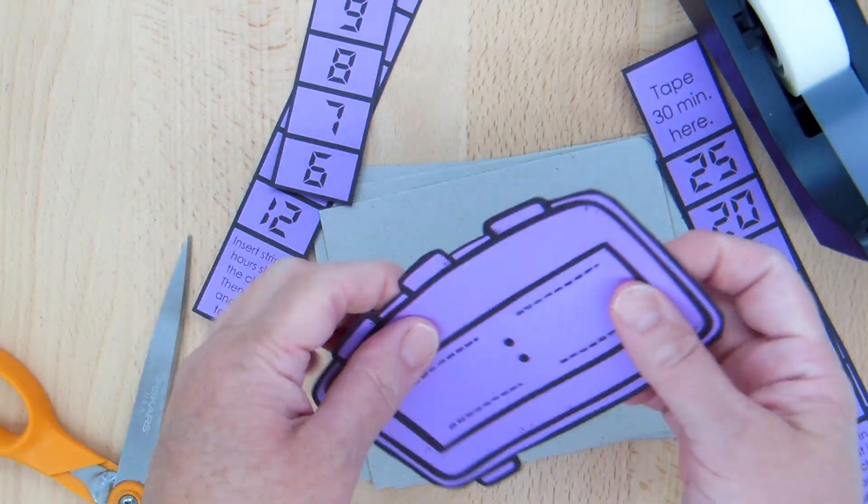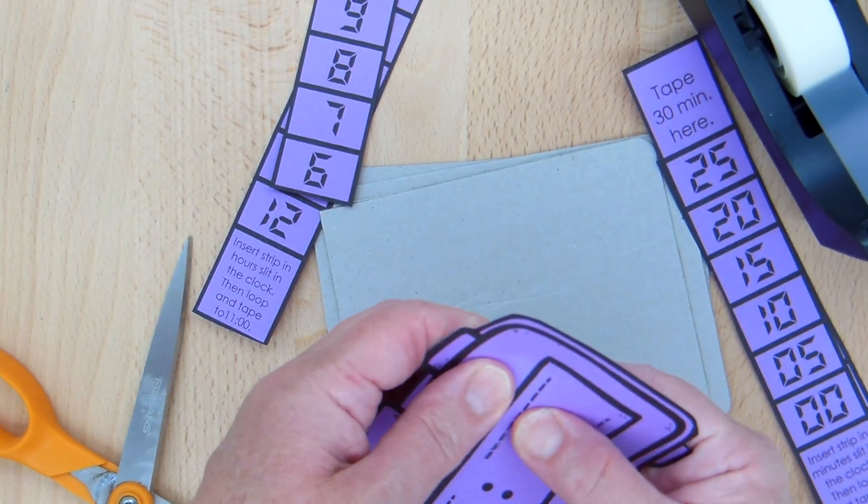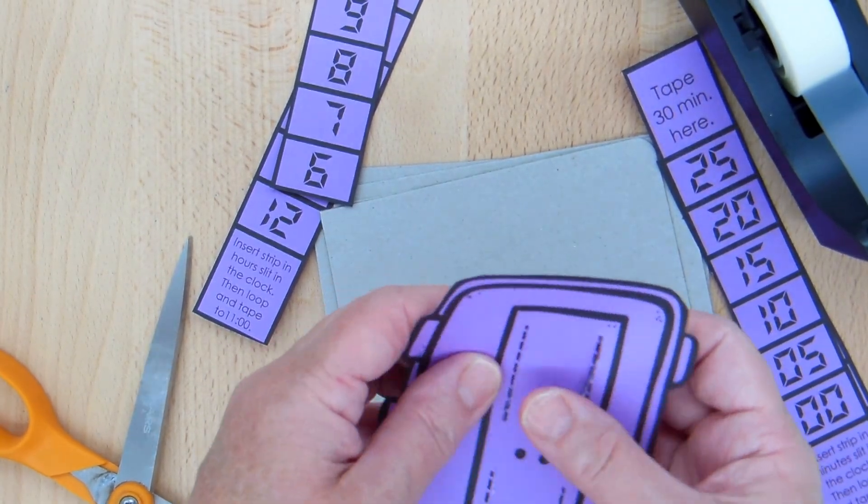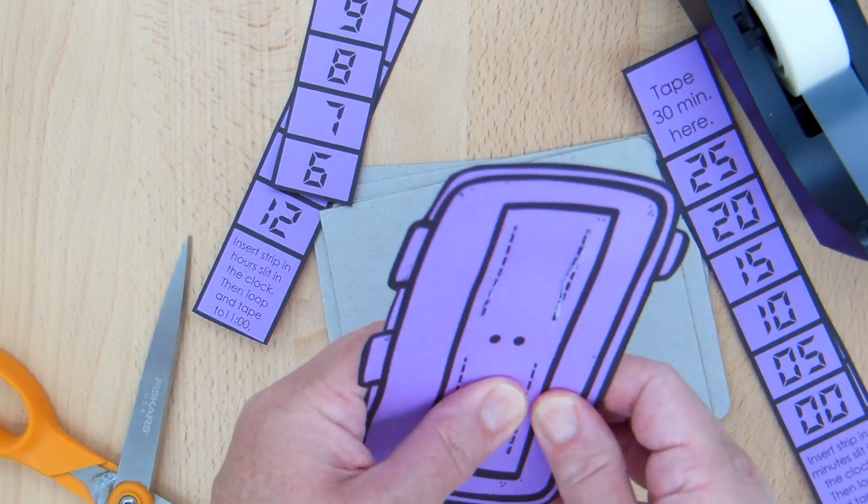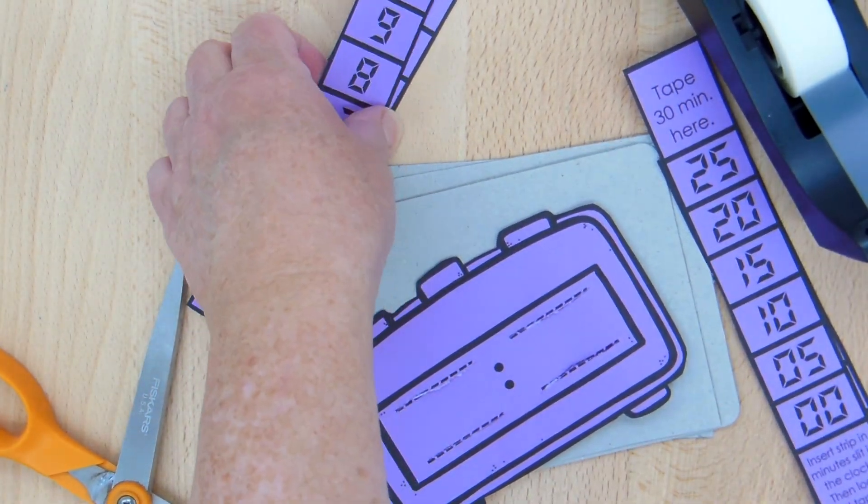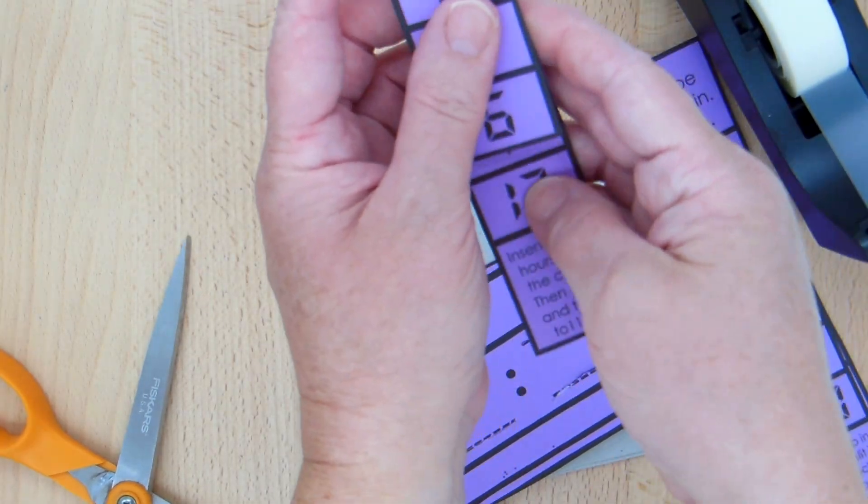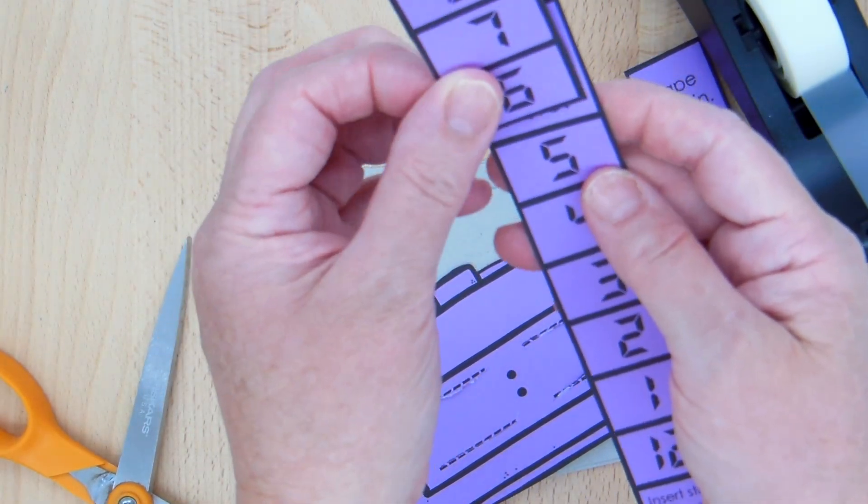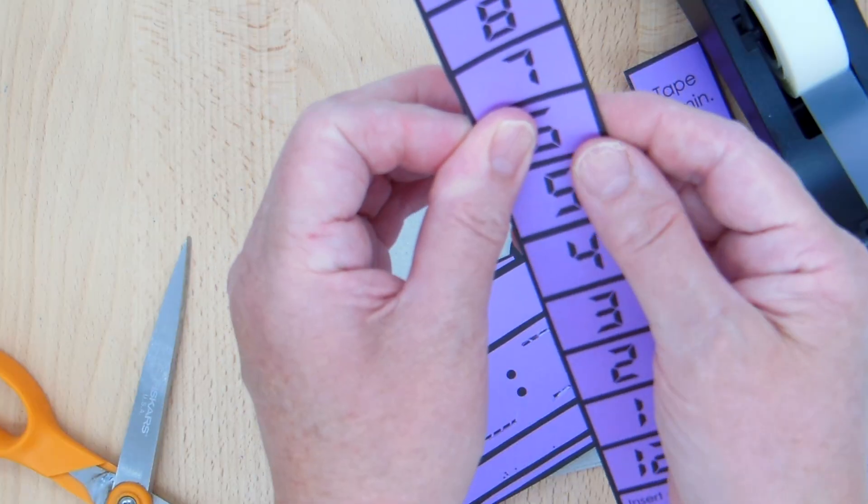Okay, now that I have my slits in my clock, I'm going to go ahead and assemble my hours. So here's my hour strips and I'm going to tape the six over the five right here.